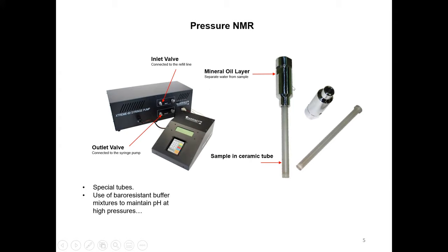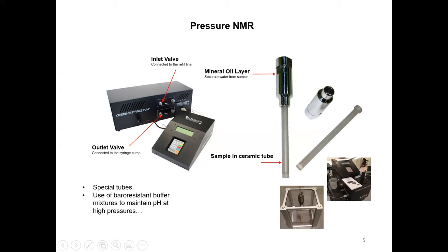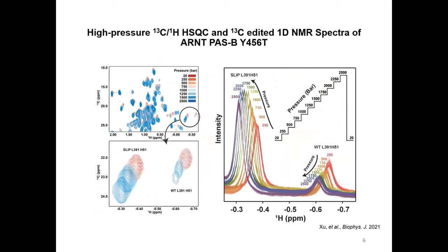We hypothesize that the transition requires some sort of unfolded intermediate state. Another big difference is that the cavity in the wild-type protein is now collapsed in the slip conformation, creating a volume difference, making the system ideal for pressure studies. The apparatus we use is commercially available. There's a pressure pump connected to a specialized pressure-resistant tube that can sustain up to 2500 bar. When we want to change pressure, we pump water to this NMR tube. The sample is separated from the water by a layer of mineral oil.